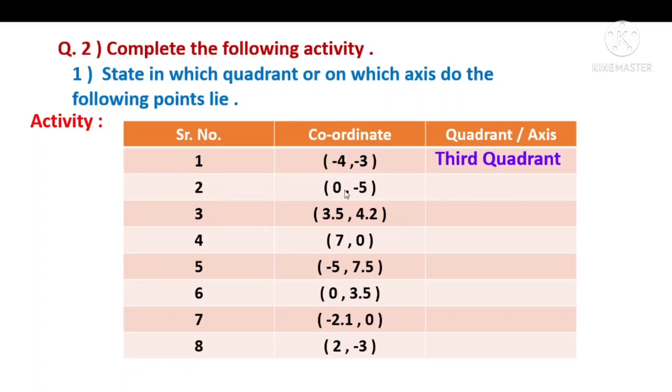Next, (0, -5). When there's a 0, it's on the axis. And -5 is here. So which axis is it on? The second coordinate is -5, meaning it's on the y-axis.